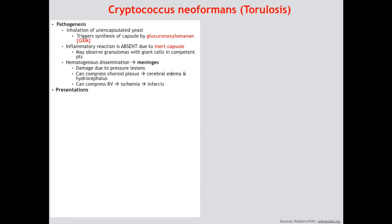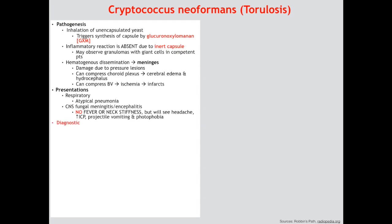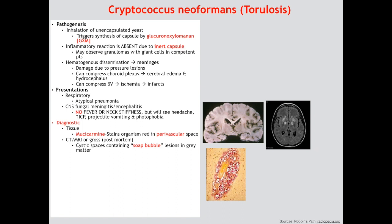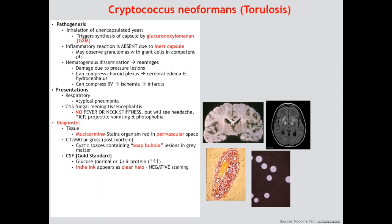Clinically, it can present as atypical pneumonia but most commonly presents as cryptococcal meningitis. You will not see fever or neck stiffness because those are inflammatory symptoms; however the patient will have a headache, increased ICP, projectile vomiting, and photophobia. For tissue samples use mucicarmine stain and you will observe the organism in the perivascular space. On CT/MRI or gross post-mortem you will see cystic spaces containing soap bubble lesions in the gray matter. CSF is the gold standard: glucose is normal or reduced and protein is very high. India ink stain will show a clear halo — negative staining — and finally latex agglutination (Weil-Felix) uses the polysaccharide antigen.